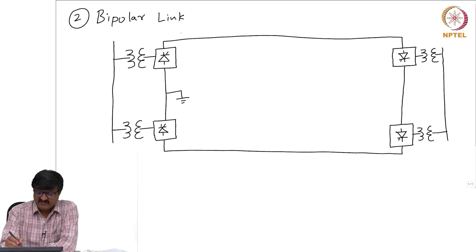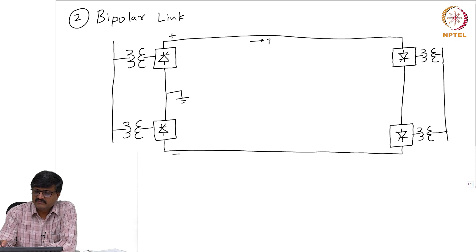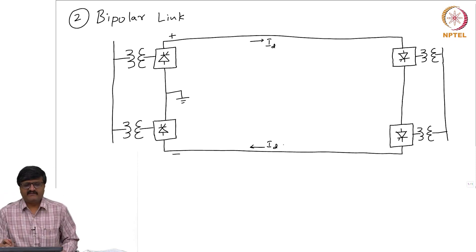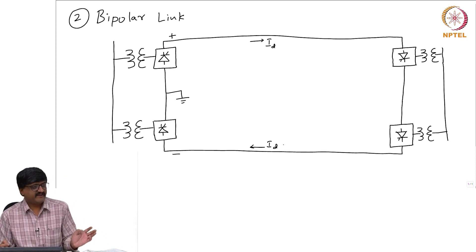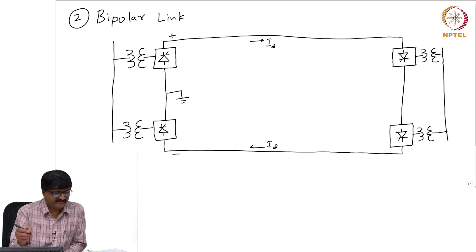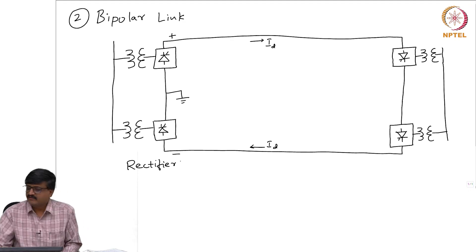Suppose I say this is the positive terminal and this is the negative terminal, and the positive current I_d is flowing in this direction. With this polarity of the DC voltage, can you say which one — the left side is the rectifier or the right side is rectifier? This is the rectifier side.